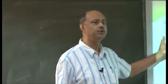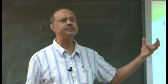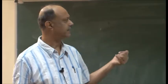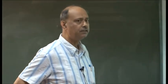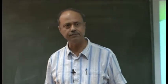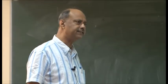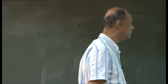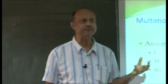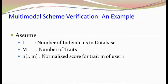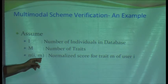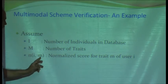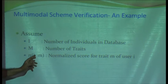First, let us understand how to fuse biometric data. The fusion I will be talking about is based on score — that is, score-level fusion. I is the number of individuals or subjects in your database, m is the number of traits. Suppose there are m traits selected for fusion, and n_im is the normalized score for trait m of user i.